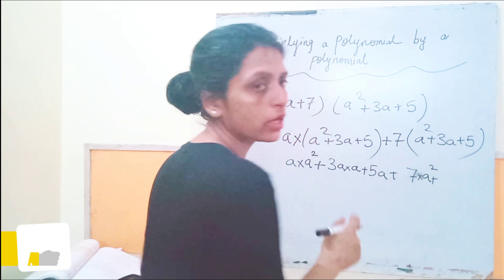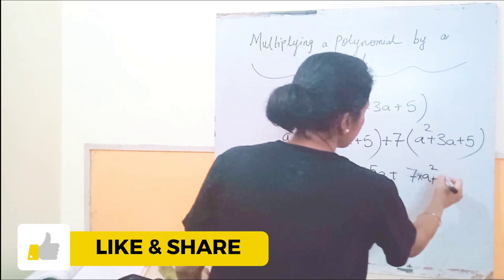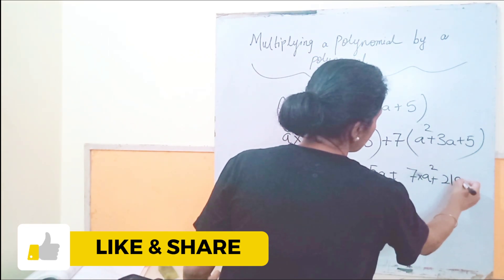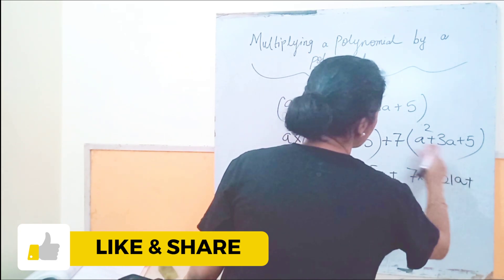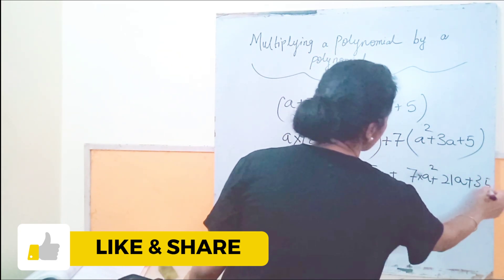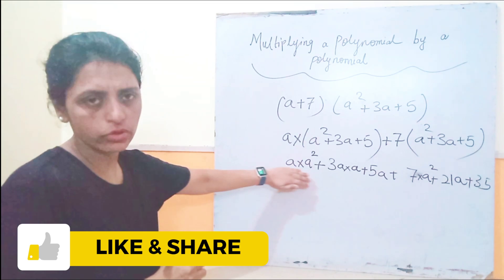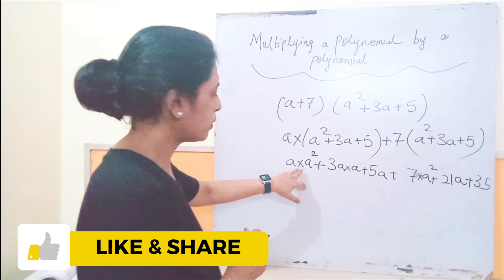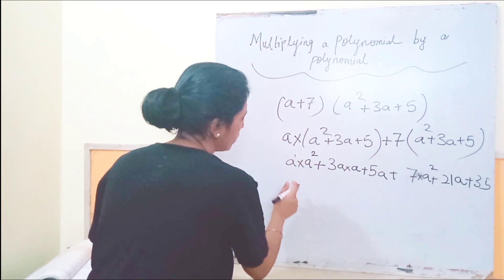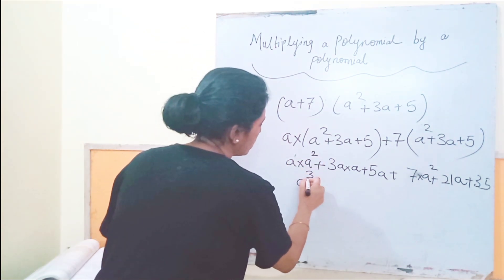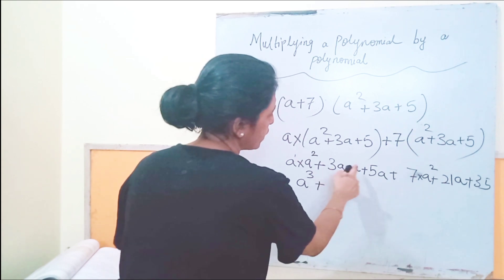is 3a squared. A multiplied with 5 is 5a. Okay, now plus 7 into a squared. Plus 7, 3 is a. I told you that only the numerical coefficients are multiplied. So 7, 3 is a, 21 into a. Plus 7, 5 is a, 35. Okay, now here how we are going to put the powers? The bases are same and the multiplication operation is there, so the powers will get added. So here the power is 1, so 2 plus 1, 3 plus 3.